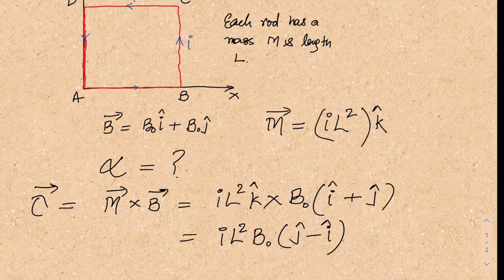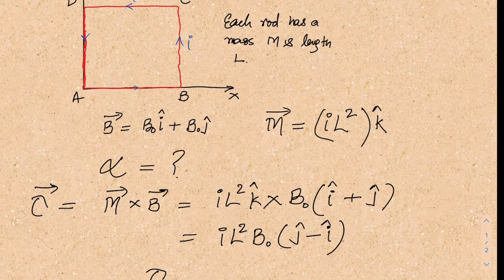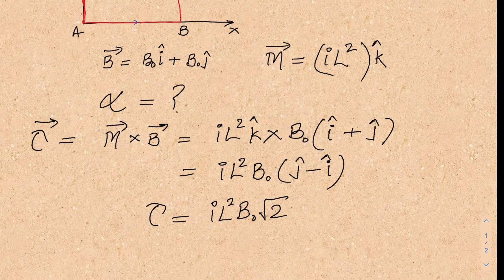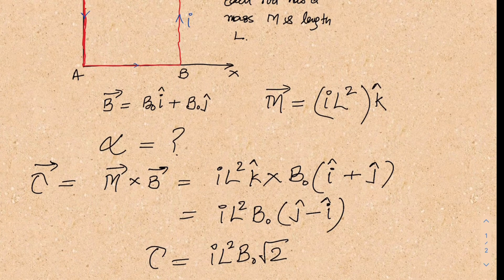So the torque vector is IL-squared B-naught times (j-cap minus i-cap). The magnitude of this torque vector is IL-squared B-naught root 2. So we've got the magnitude of the torque vector. Now the second task is to see the direction of this torque vector, which is exactly the direction of the j-cap minus i-cap vector.